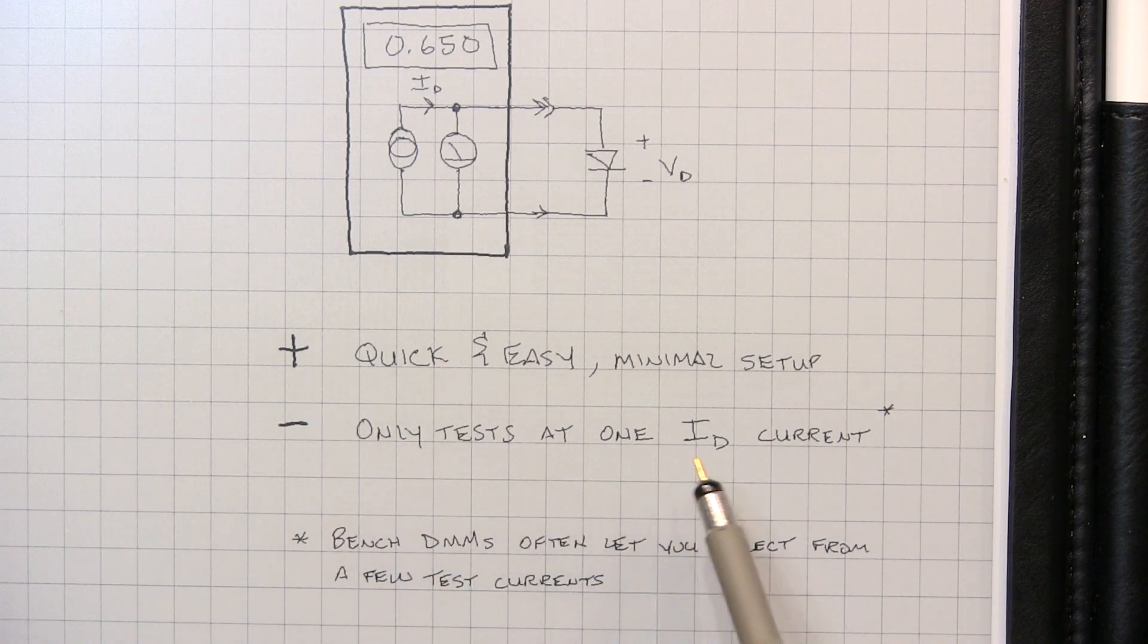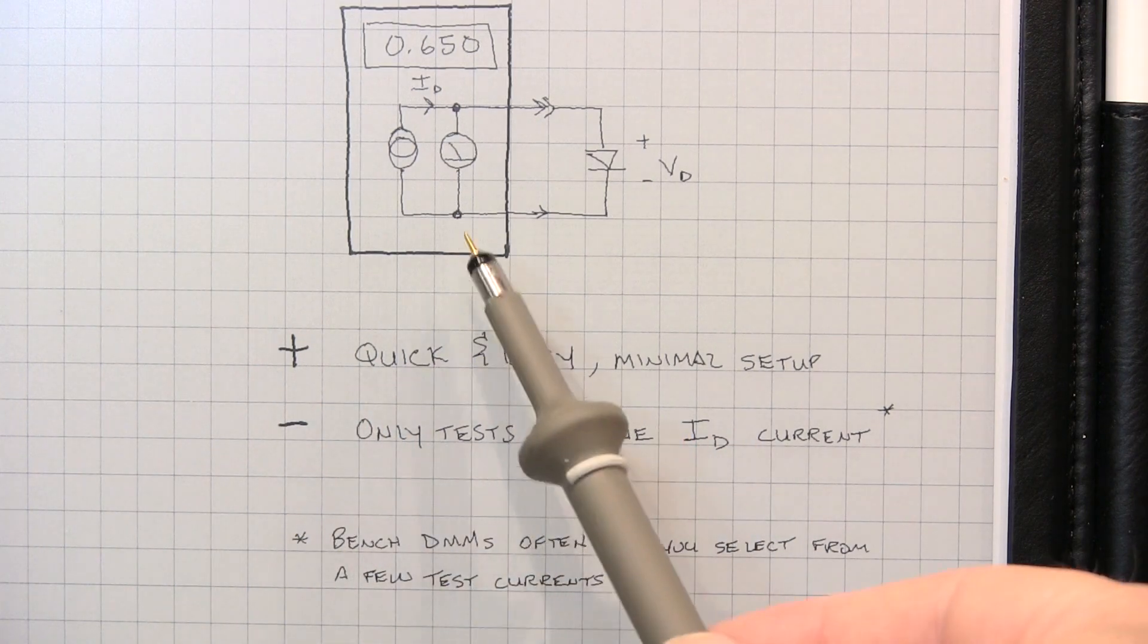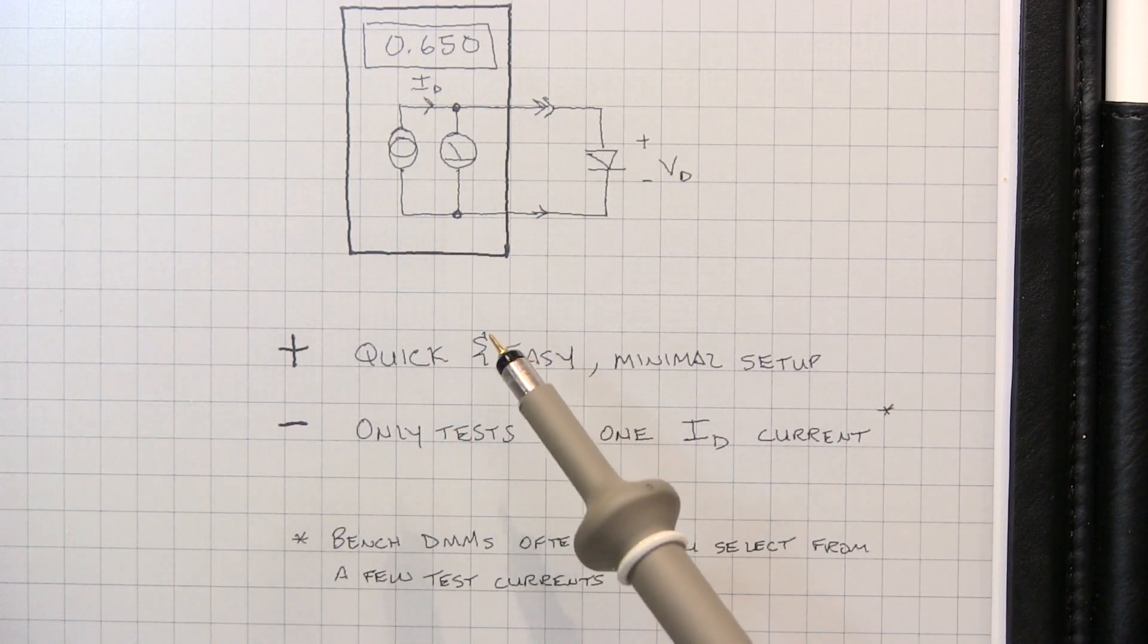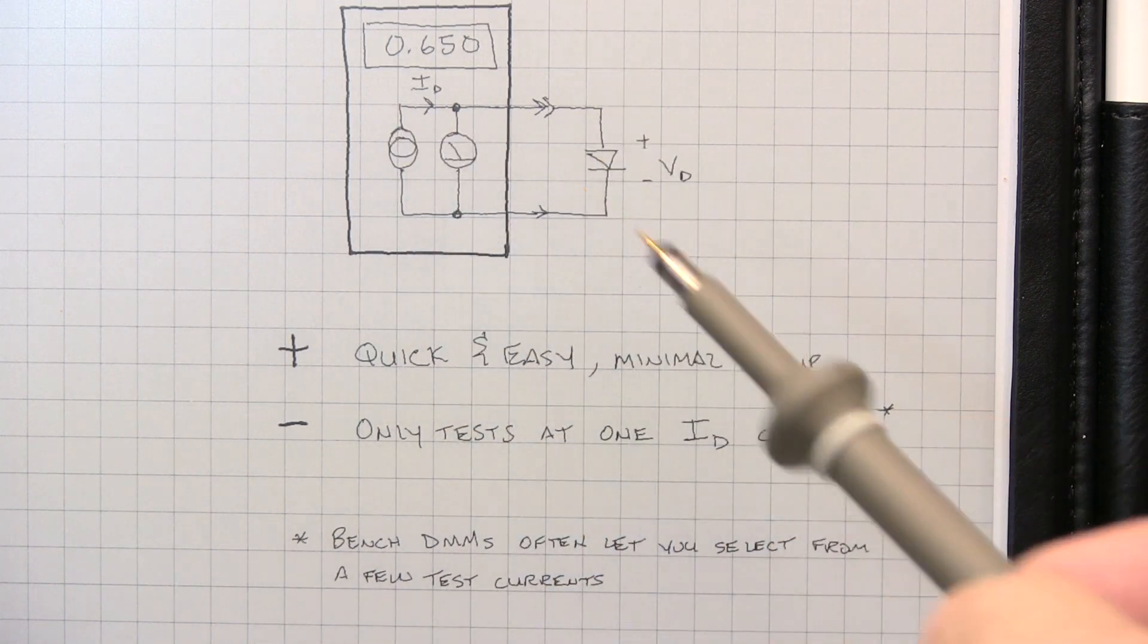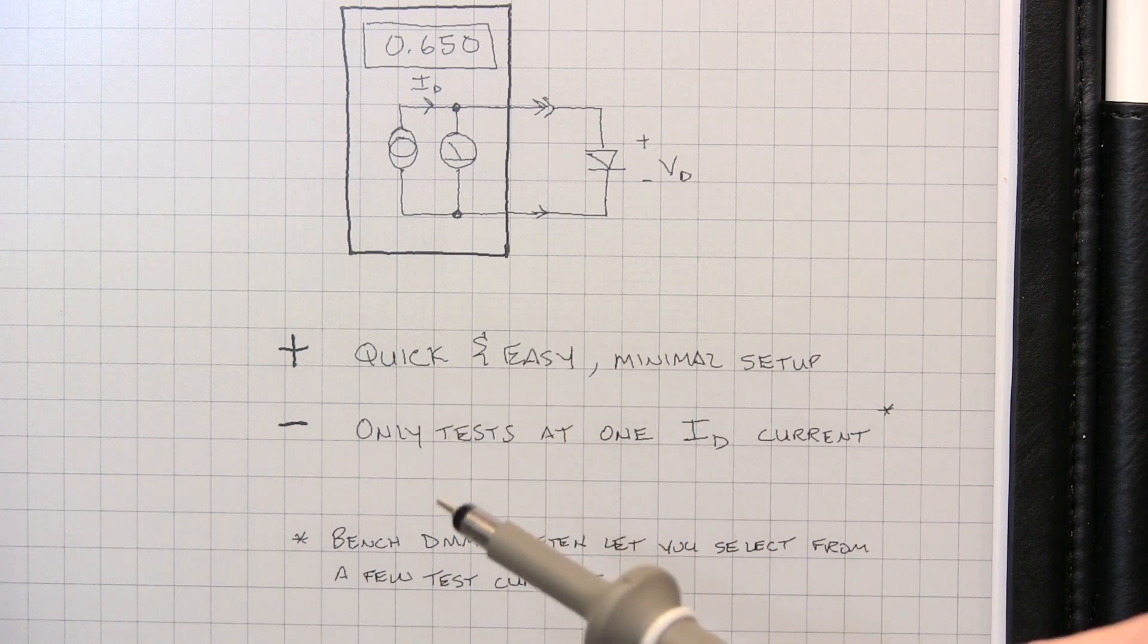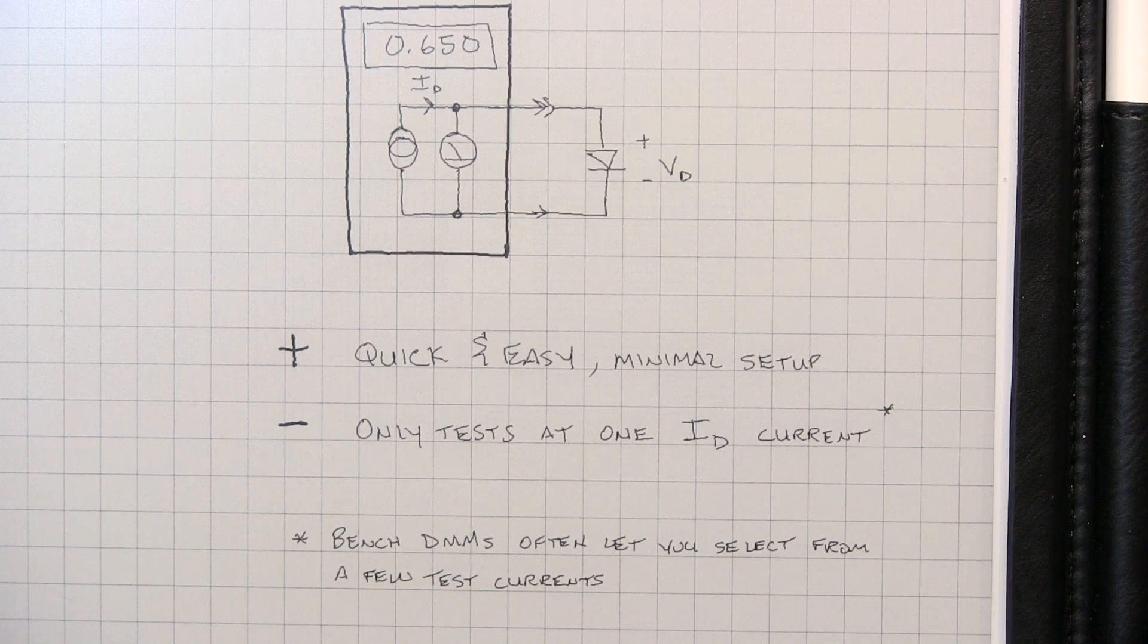The downside is it only tests the diode at one forward current. The Fluke 87 I was just using makes about 0.65 milliamps, or about 650 microamps of current to test the diode. I've got a Fluke 79 here that does about 0.6 milliamps, but there's no consistency in the current that's being used. So you might get some misleading results if you, certainly if you test the diodes with different meters. Also, you have to consider that the test current that's being used may or may not be close to the diode current that's going to be used in the particular circuit or application. So that's one of the downsides to this very simple method.